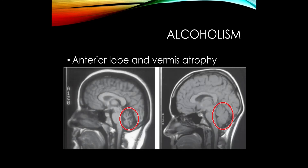Chronic alcoholism essentially pickles the cerebellum. On sagittal MRI, the normal healthy cerebellum versus the atrophied one shows lots of fluid space and prominent folia due to atrophy. Alcohol especially affects the anterior lobe and the vermis — important for midline truncal musculature — so alcoholics tend to have truncal midline ataxia rather than distal extremity ataxia.